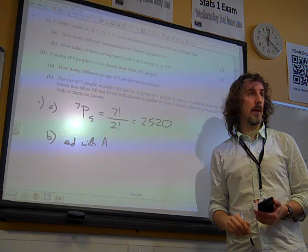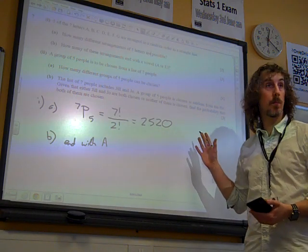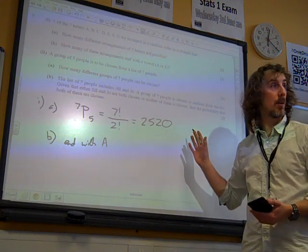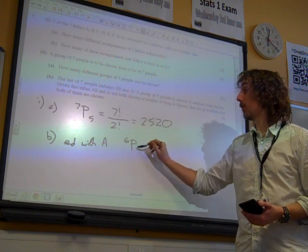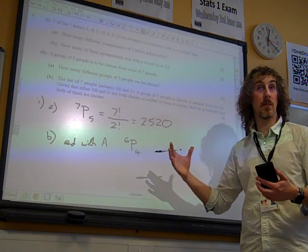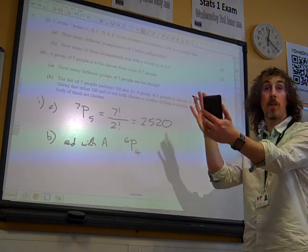If they end with A, that means A is one of our five, and it happens at the end. So, of the remaining six letters, we need to find arrangements of four of them to go before the A.